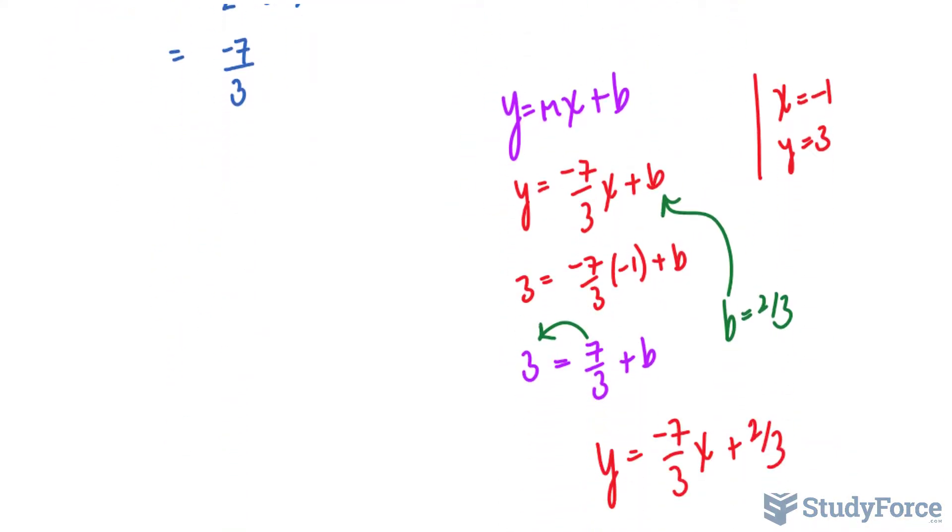To get the last one, standard form, it looks like this. Ax plus By is equal to C, the constant.